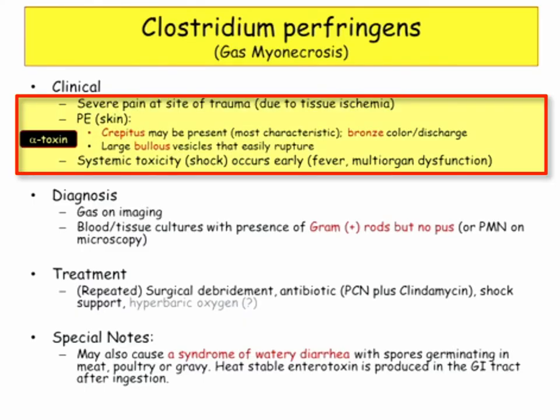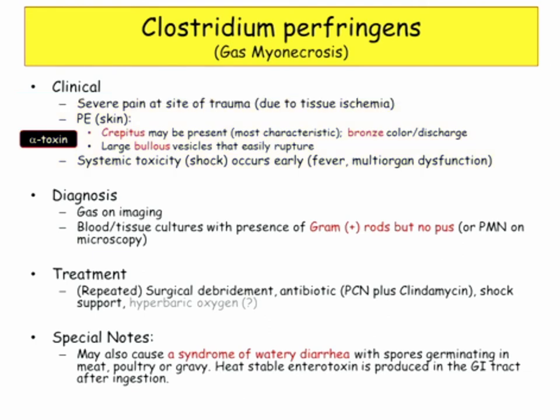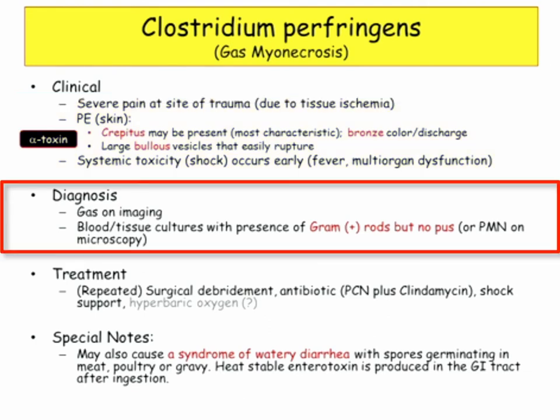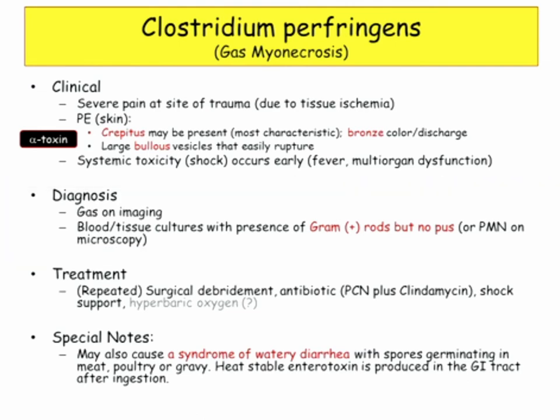Clinical clues include severe pain, tissue ischemia, crepitus from gas, bronze skin discoloration, large bullae, toxicity, and multi-organ failure. For diagnosis: gas on imaging, blood cultures are negative. In the tissue you can see gram-positive rods but no pus, because there's no inflammatory response. Treatment is major surgical debridement — antibiotics play a small role; it's all about surgery. They're not going to ask you to treat this; they're going to ask you to make the diagnosis and identify how the toxin causes the problem.